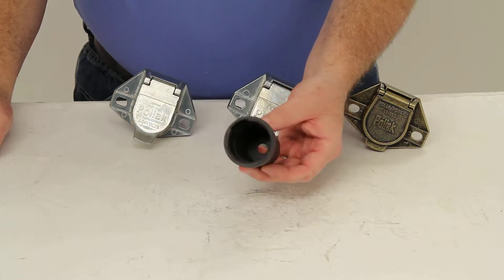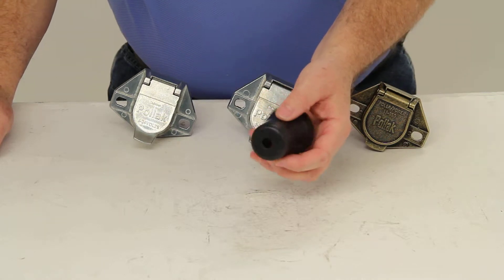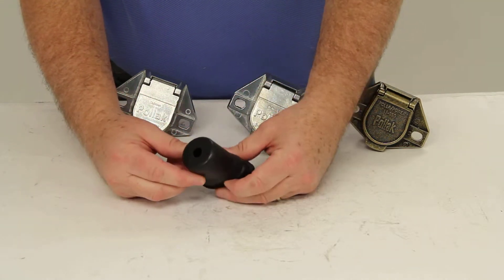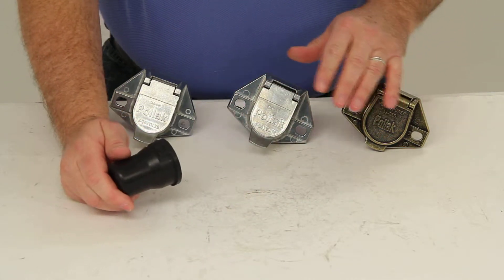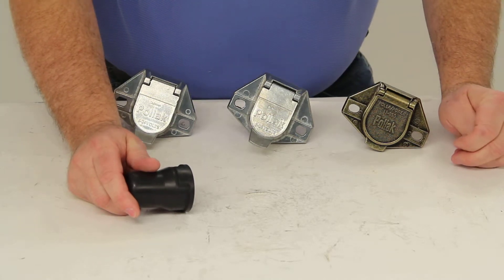Today we're going to review part number PK11761. This is the Pollak 7-Pole Rubber Boot Socket Boot. Basically this rubber boot is used to protect the back of a vehicle end connector from the elements and water getting to the wire connections.